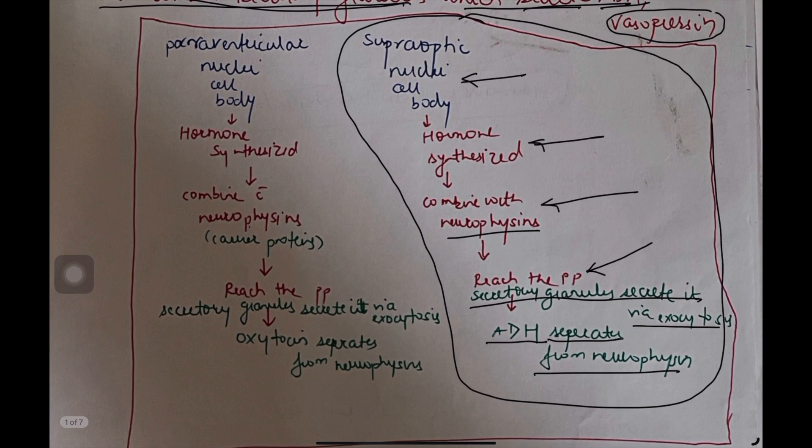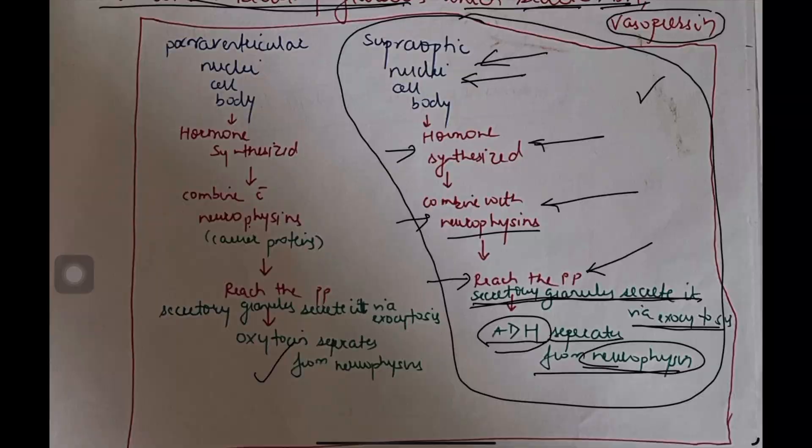You can draw this diagram in the exam. It is a flow chart. Let's consider this side because we are doing only ADH. This is oxytocin. Supraoptic nuclei secrete the hormone. The hormone combines with neurophysins. It reaches the posterior pituitary. Secretory granules secrete it via exocytosis, and ultimately ADH separates from neurophysins.